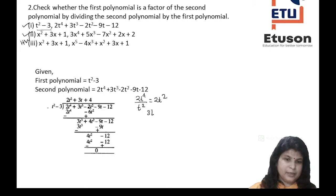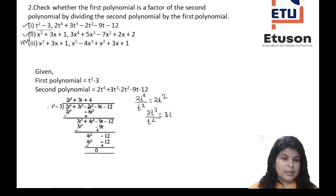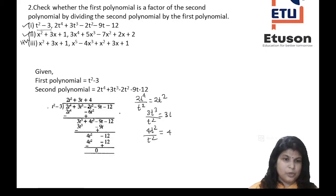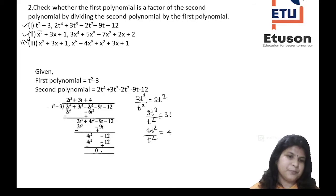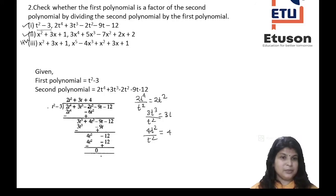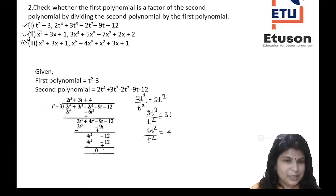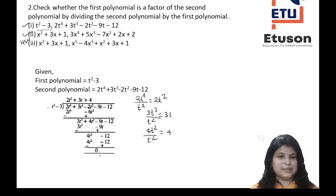Again, 3t³ divided by t² = 3t, so +3t is written in the quotient. Multiply 3t with t² - 3 to get 3t³ - 9t. Subtracting gives new dividend 4t² - 12. Then 4t² divided by t² = 4. Multiply 4 with t² - 3 to get 4t² - 12, which gives remainder equal to 0. Since the remainder is 0, t² - 3 is a factor of the second polynomial.